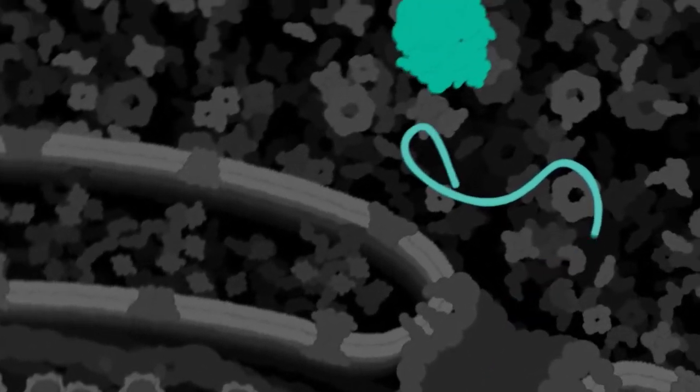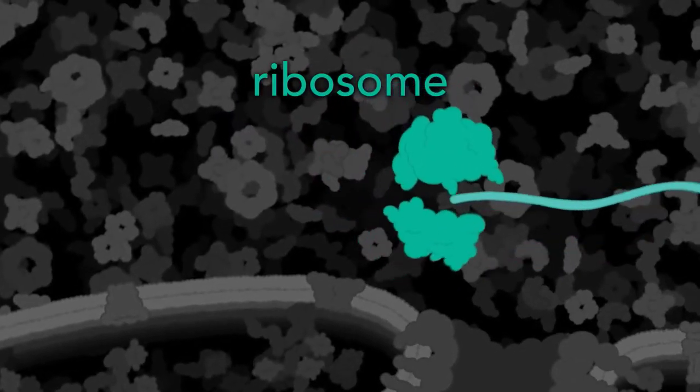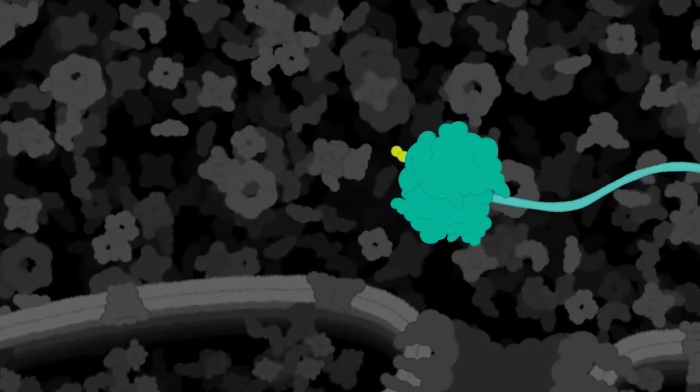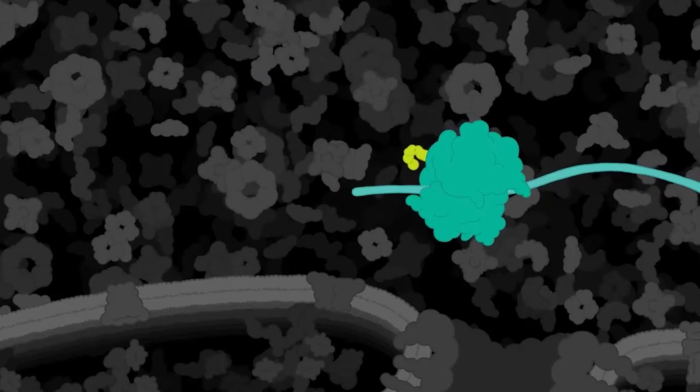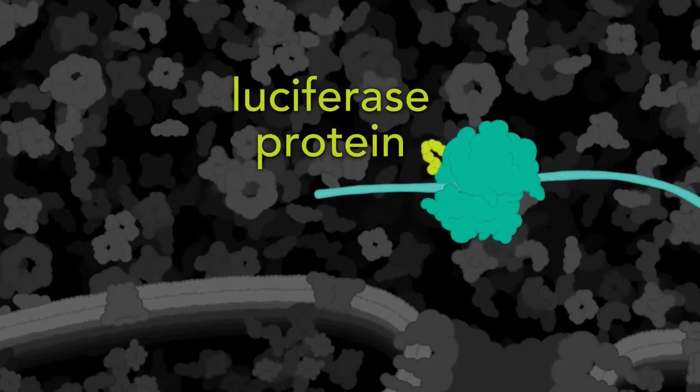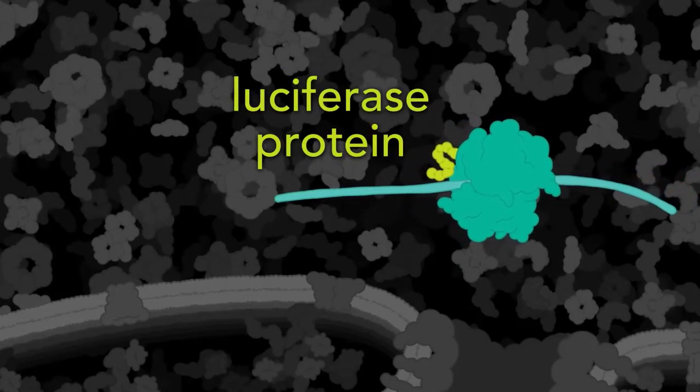The mRNA attaches to a ribosome, the cell's protein-making machinery. The ribosome reads the molecular code of the mRNA to build a luciferase protein, one amino acid at a time.